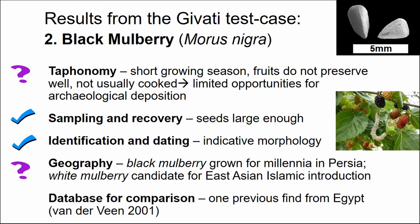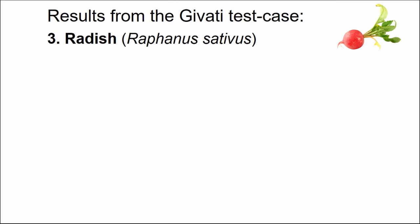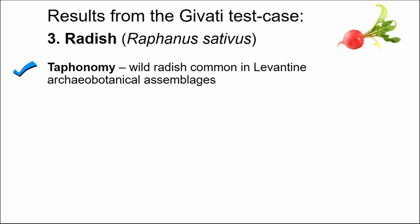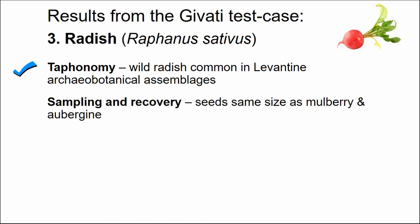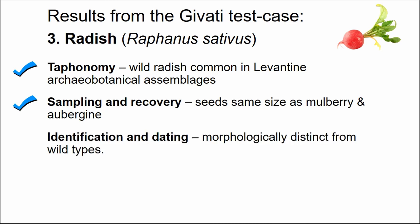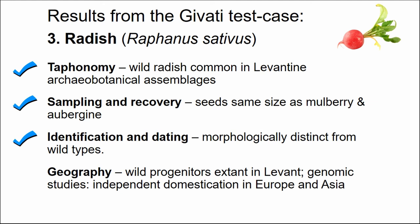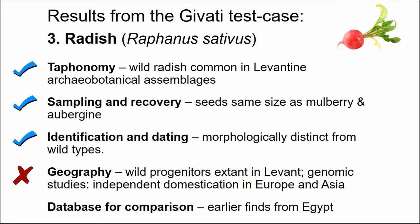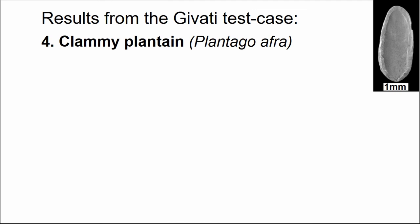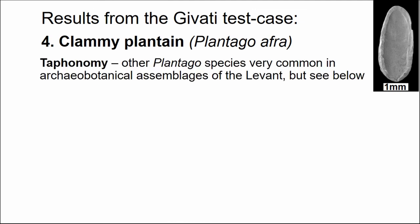The kicker for black mulberry is the database: there is one previous find of black mulberry from Egypt, so it's not a new introduction. For radish: taphonomically not an issue — wild radishes are common in Levantine assemblages; seeds are similar in size so they should be found. Identification is straightforward, but geographically, wild progenitors of radish are found in the Levant and genomic studies suggest independent domestication in Europe and Asia, so there's no reason to assume it was introduced from abroad. Earlier finds from Egypt also rule it out.